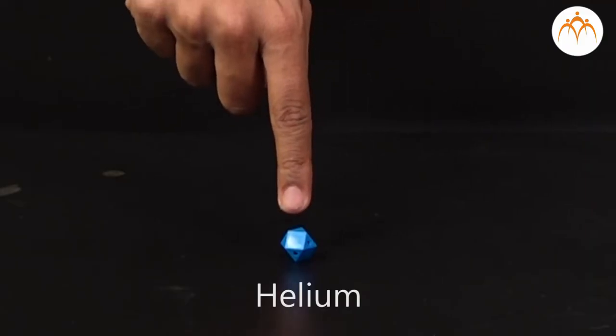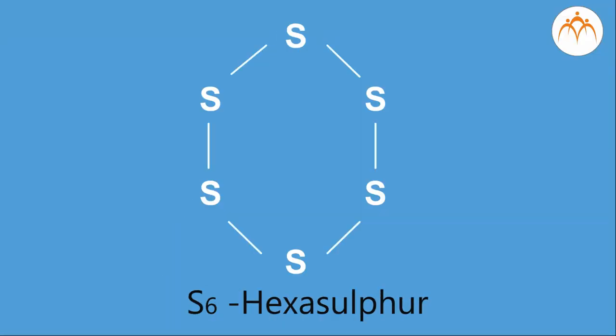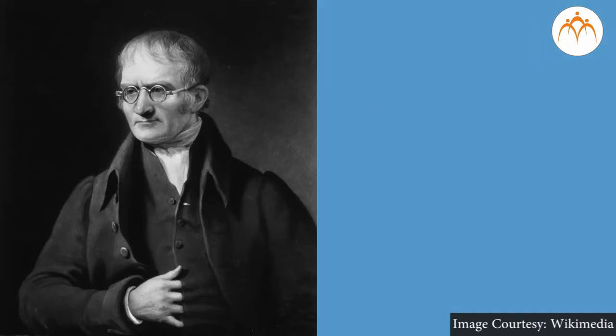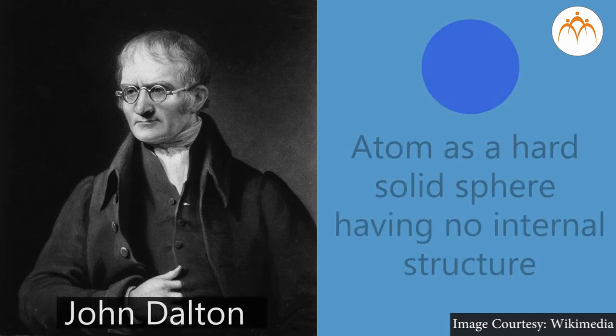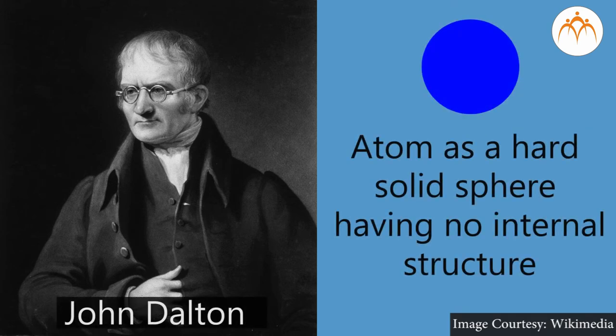The molecules of some elements can be monoatomic, having only one atom — for example, helium; diatomic, having two atoms — for example, O₂; or polyatomic, having more than two atoms — for example, O₃, P₄, S₆, etc. In 1803, Dalton was the first to visualize the atom as a hard solid sphere having no internal structure.